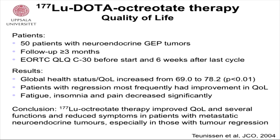A few words about quality of life: an analysis from the Dutch group of 50 patients with neuroendocrine GEP tumors followed up with a questionnaire before and six weeks after the last cycle showed that several aspects of quality of life increased significantly. Patients with regression most frequently had improvement in quality of life. Fatigue, insomnia, and pain decreased. Their conclusion was that lutetium improved quality of life in several functions and reduced symptoms — consistent with our own experience. Most of our patients feel well, better than before treatment.